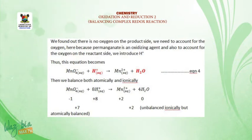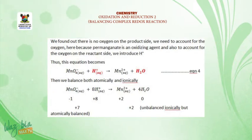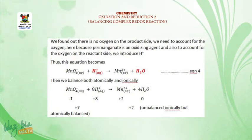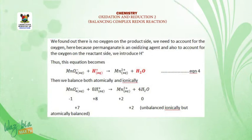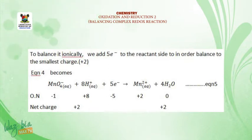We balance both atomically and ionically. Therefore, we now have MnO₄⁻ + 8H⁺ → Mn²⁺ + 4H₂O. Considering the oxidation numbers: on the reactant side MnO₄⁻ is −1 and 8H⁺ is +8, so −1 + 8 = +7. On the product side, Mn²⁺ is +2 and 4H₂O is 0, giving +2. Since this is not ionically balanced, we add 5 electrons to the reactant side to reduce the charge down to +2.